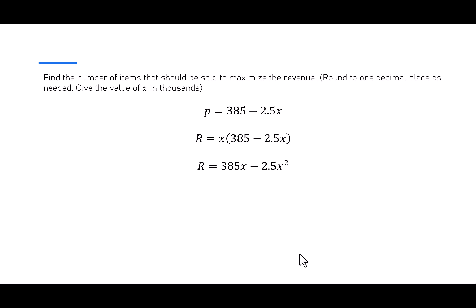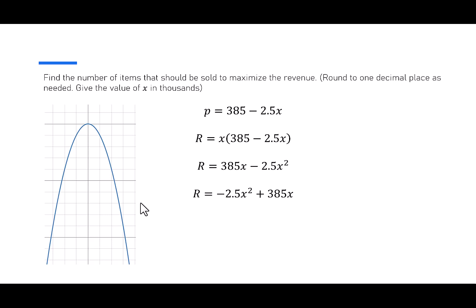You can see this is a quadratic because it has a squared term. I think it's going to make everything easier if we write this in descending order. So I'm just going to rearrange it, make R be negative 2.5x squared plus 385x, so that when we go to look at this as a quadratic, we can see our coefficients of a, b, and c really easily.